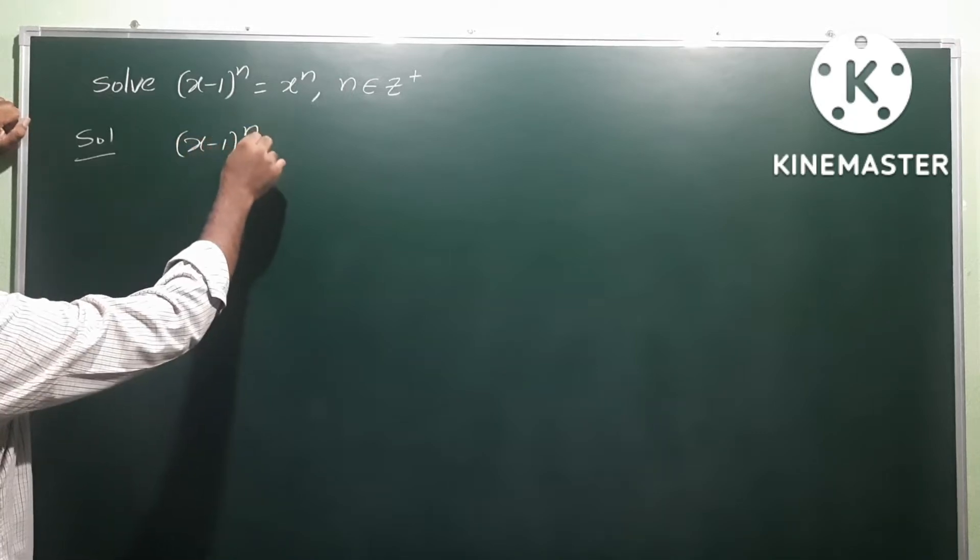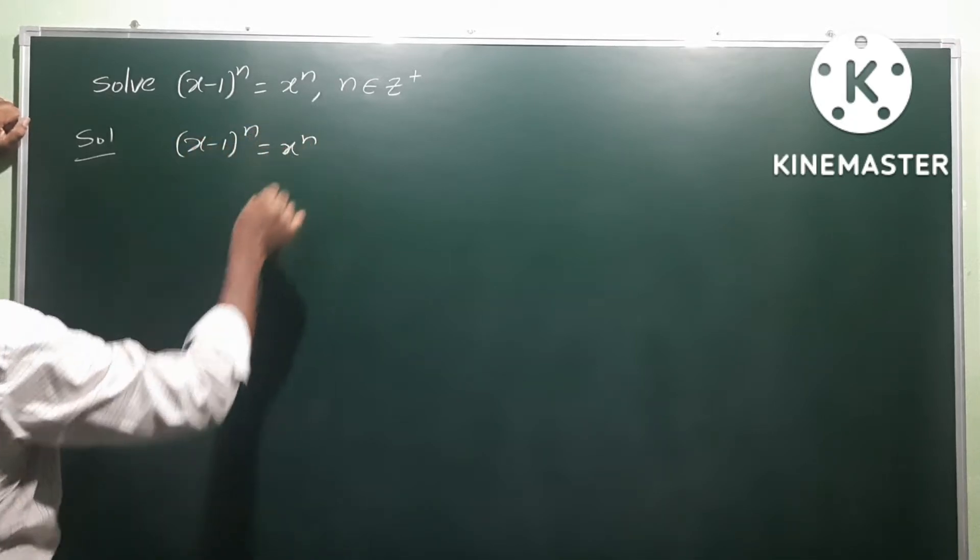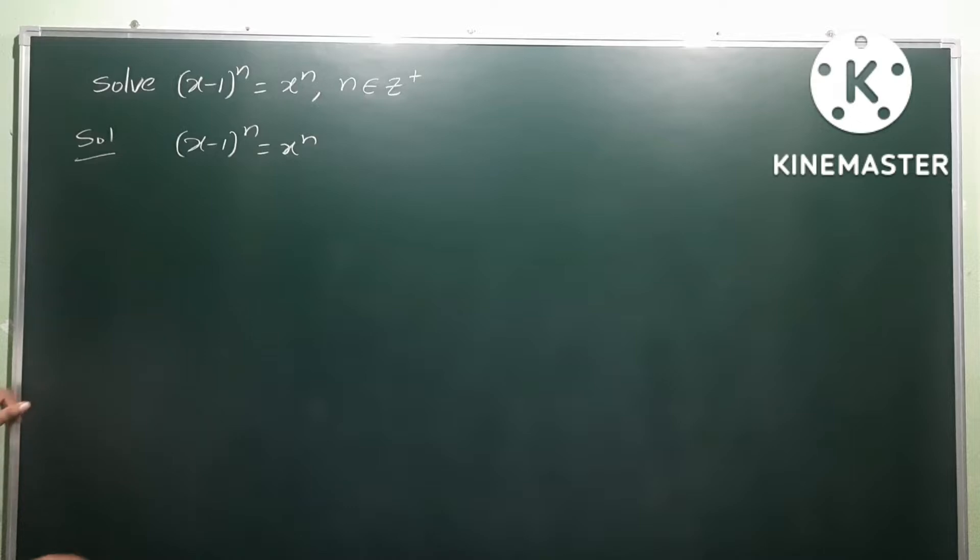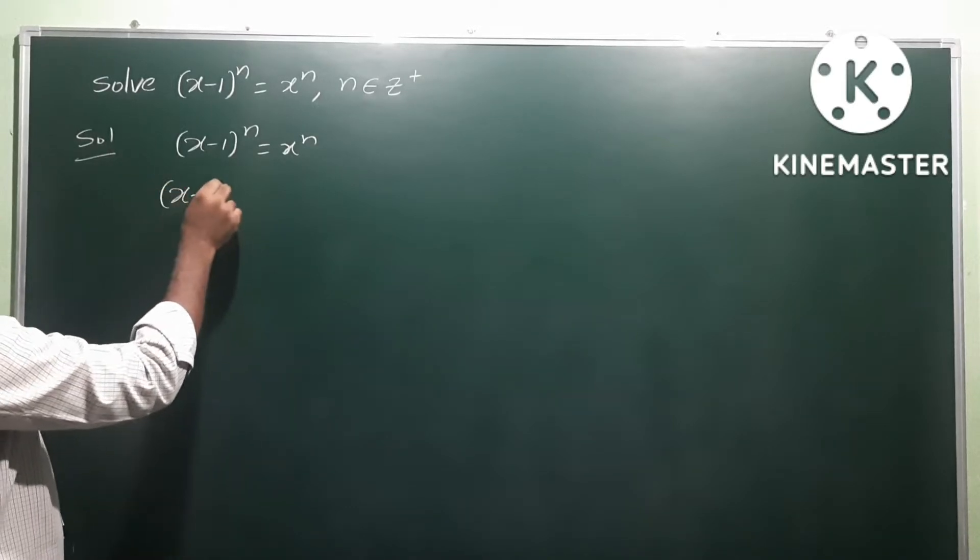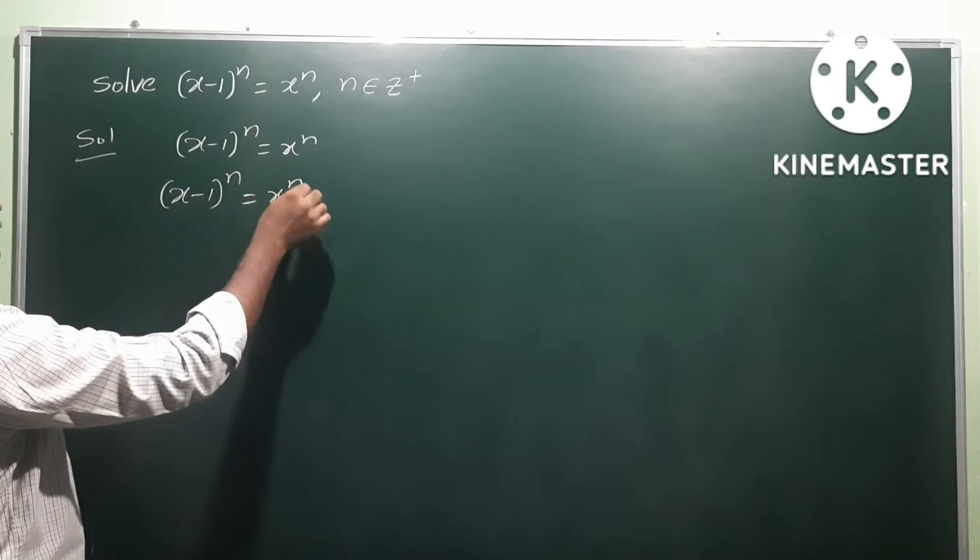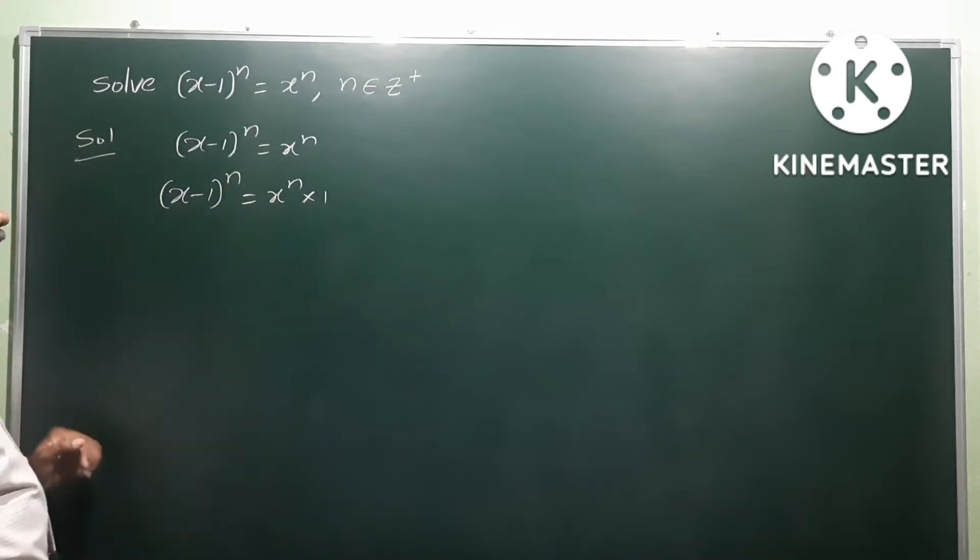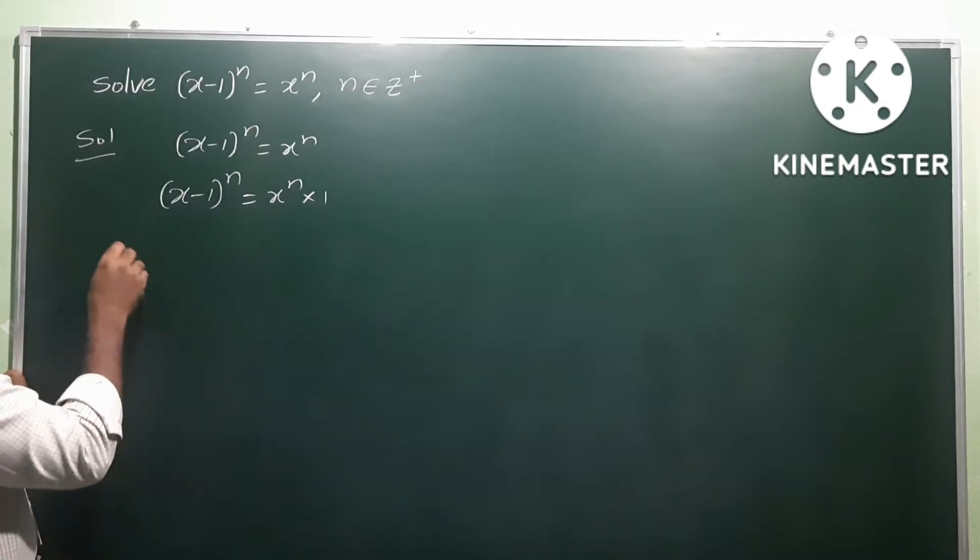So let us see the solution. Given (x-1)^n = x^n, we can represent this as (x-1)^n = x^n times 1. Multiplying by 1 rationally doesn't change anything.